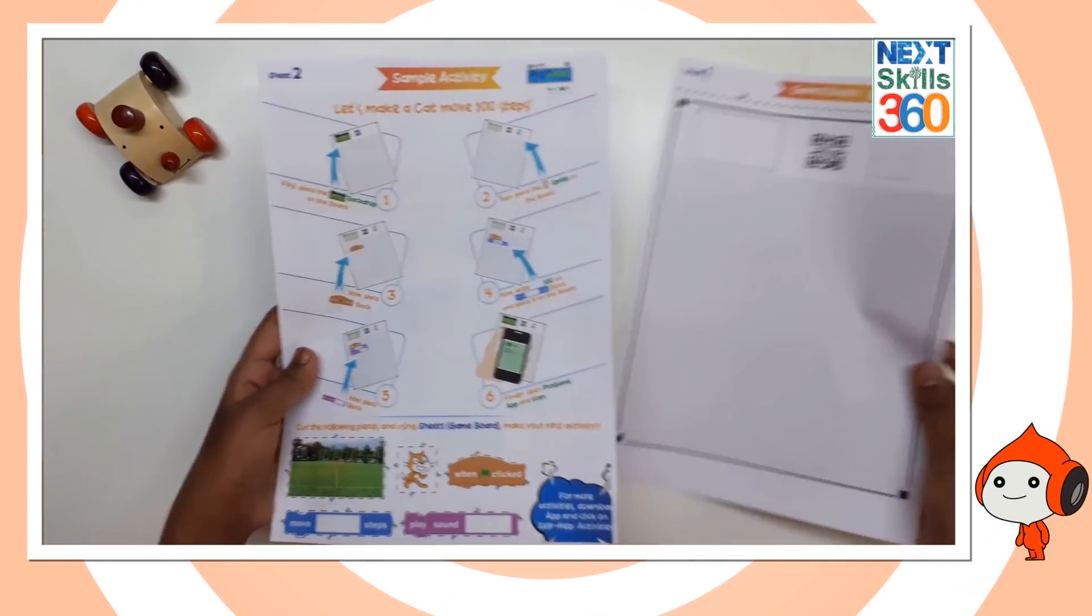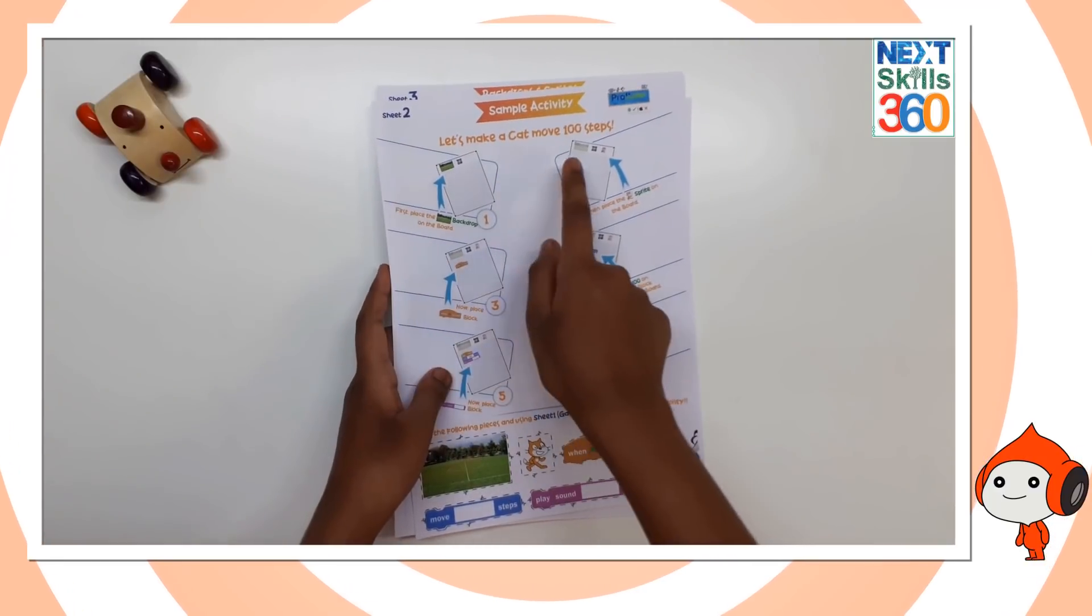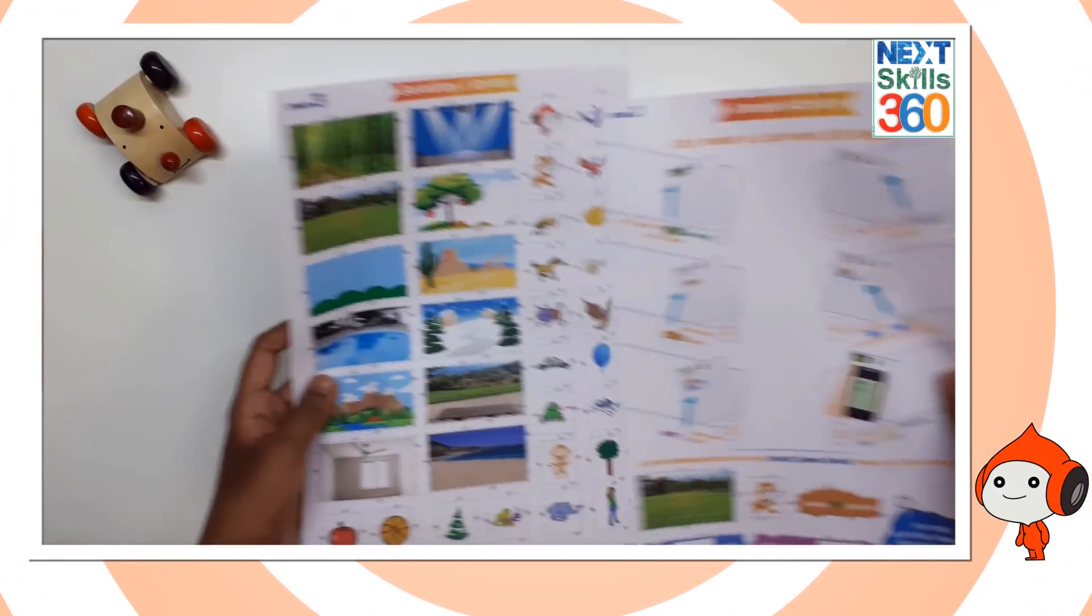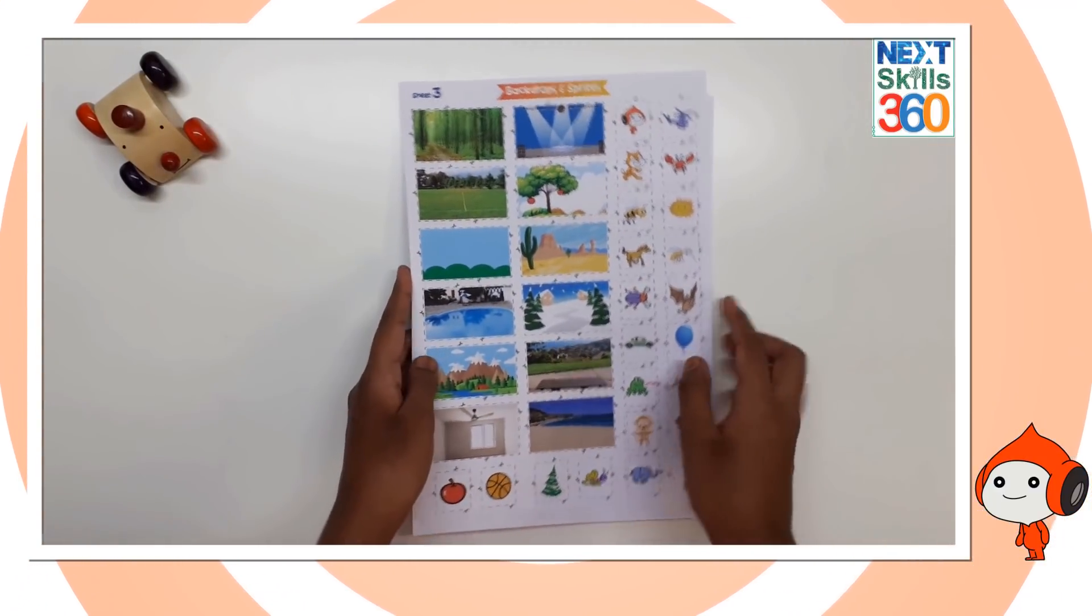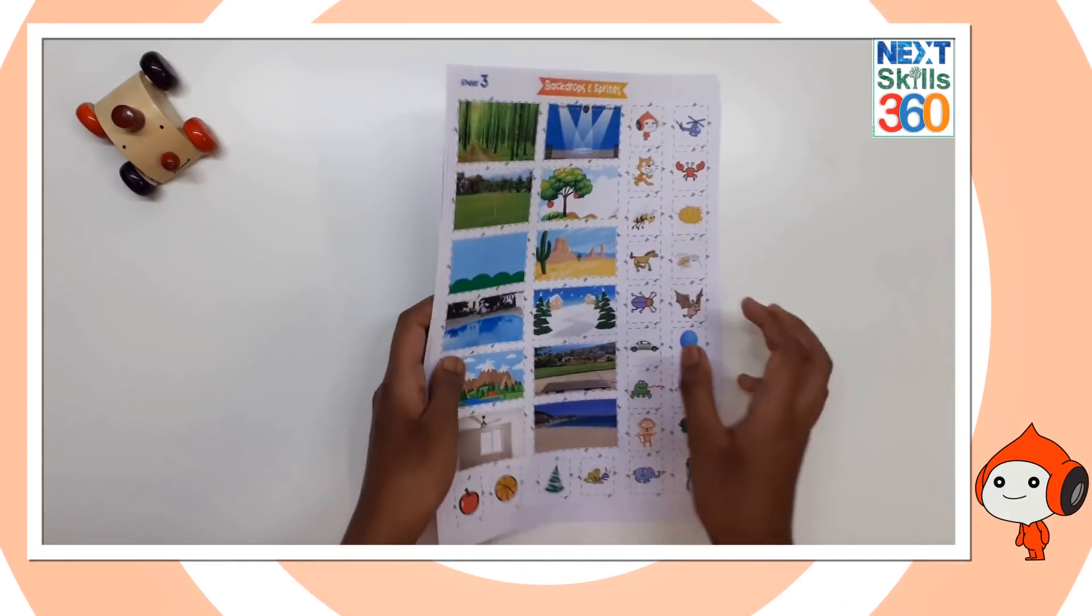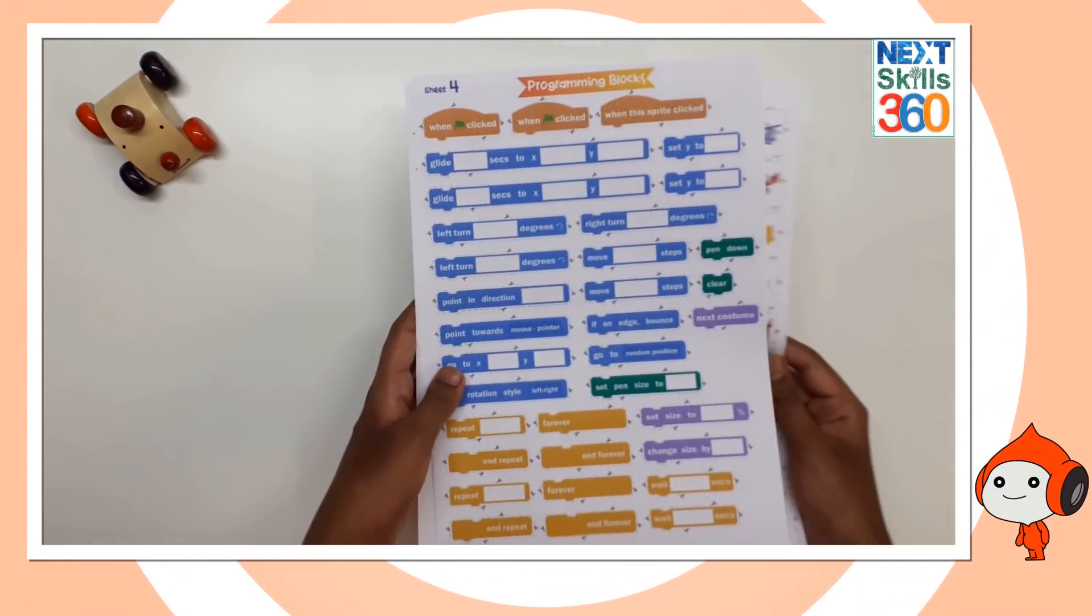Sheet 2, which is our sample activity. Sheet 3, which are our backdrops and sprites.